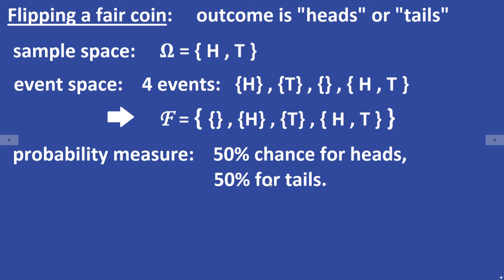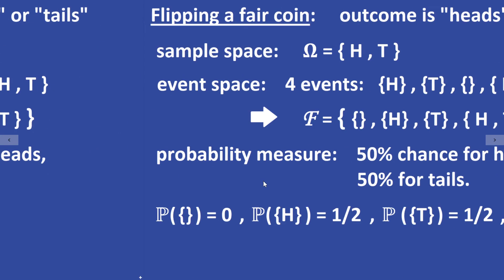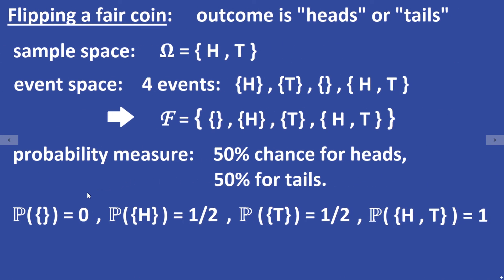So the probability measure looks like that. The probability that nothing happens is equal to zero. The probability for tossing heads is equal to one half. The probability for tossing tails is equal to one half. The probability that something happens, so either heads or tails, is equal to one.